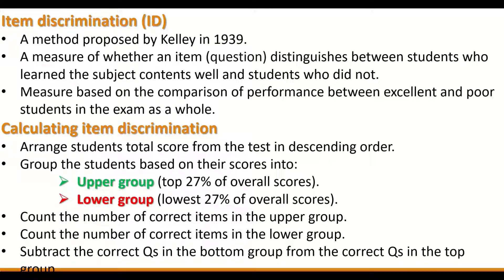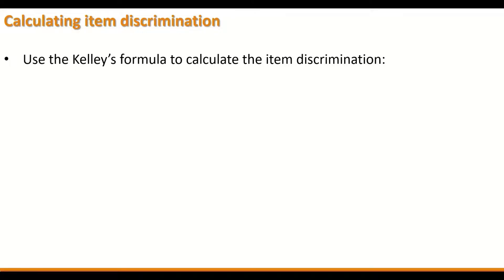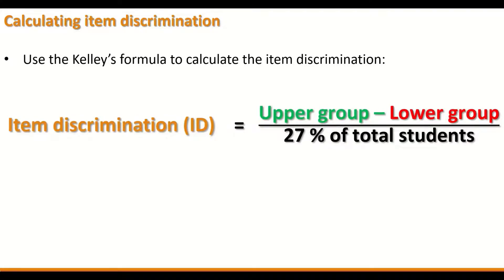Subtract the correct questions in the bottom group from the correct questions in the top group. Then use Kelly's formula to calculate the item discrimination: ID equals the upper group minus the lower group, divided by 27% of total students — that is, calculating the upper group proportion and the lower group proportion and subtracting them to get the ID. An ID percentage can also be calculated by multiplying the ID by 100.